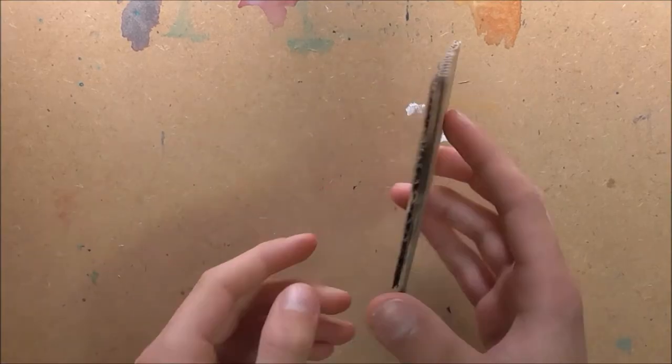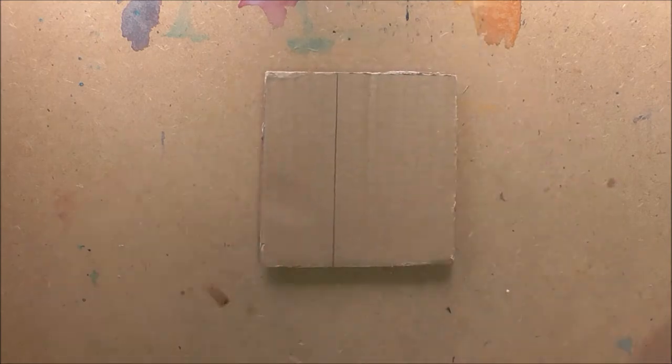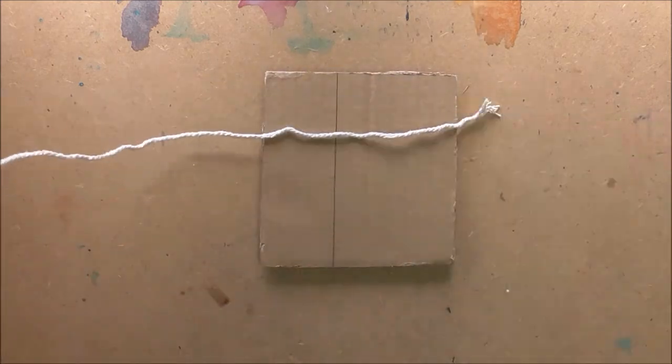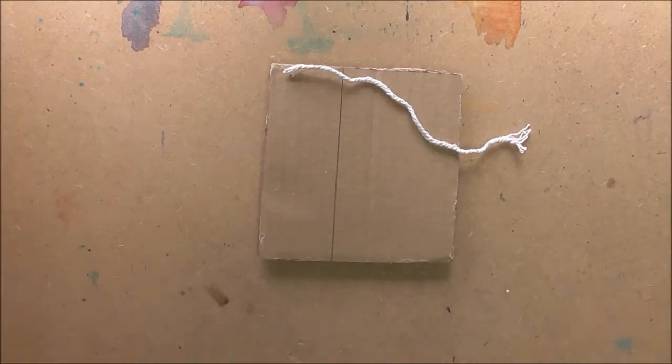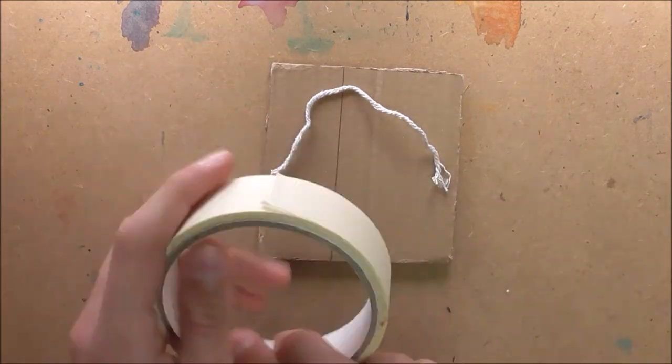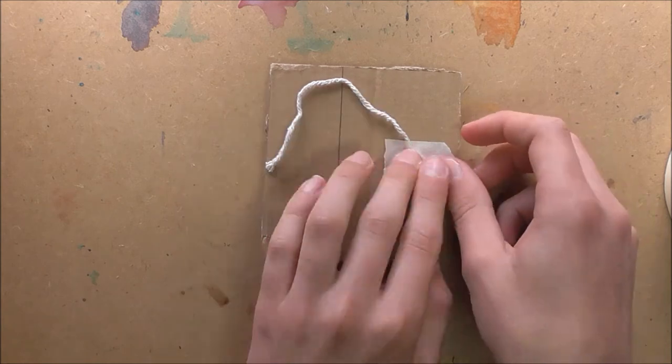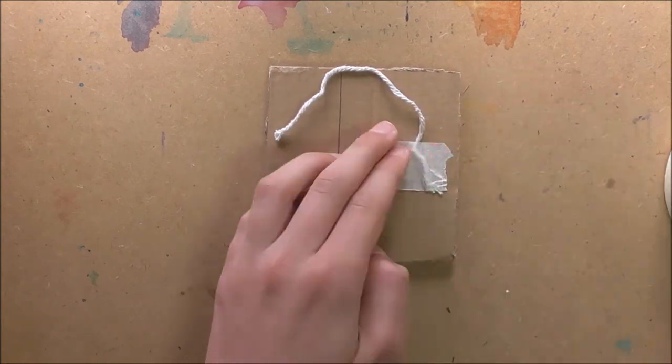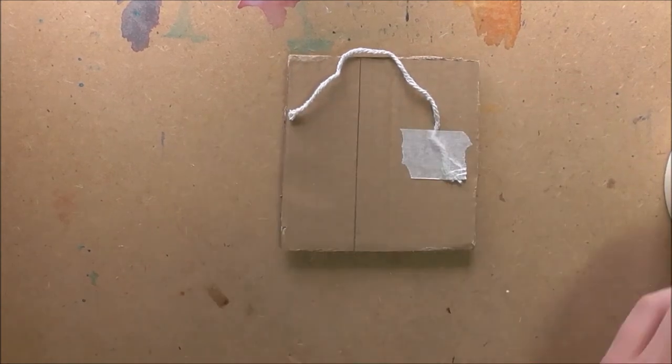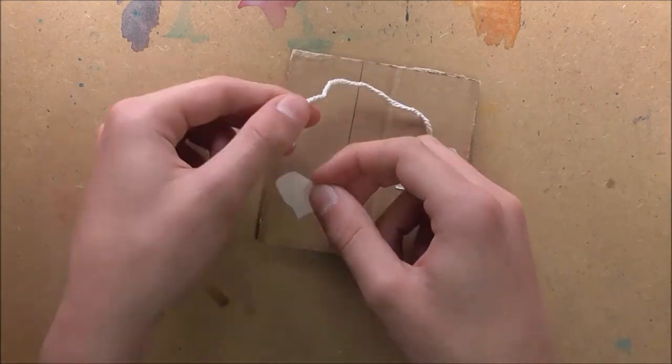And once you've stuck that down just like this, this is an optional step, but I'm taking a bit of string, cutting it to about the same length as the cardboard piece, and I'm just going to tape it down. This is going to be a handle just to make it easier to lift up when you're printing. This is optional, you do not have to do this, but I just find this helps a lot.